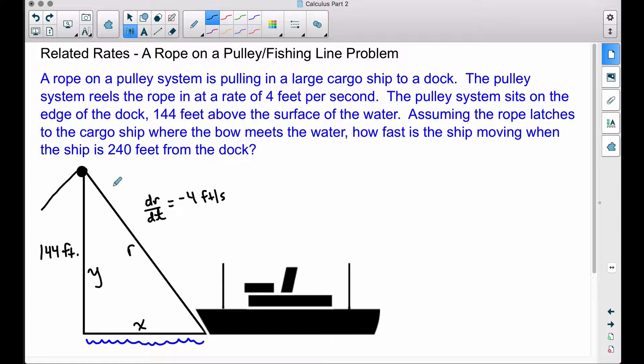I have a picture down here already set up with some pieces of information. We have a right triangle. Here's our rope. Here is the post that this pulley sits on. Notice the pulley is 144 feet above the surface of the water. I've called this length here Y. The distance that the boat is from the dock is going to be X, and our rope here is R.